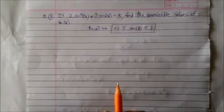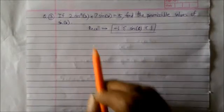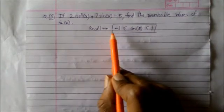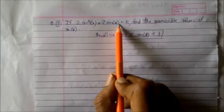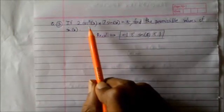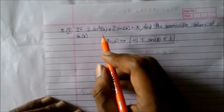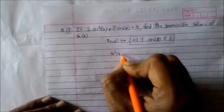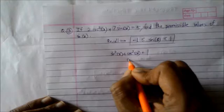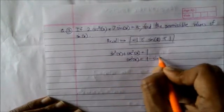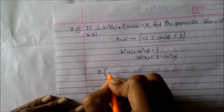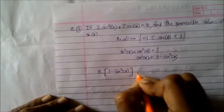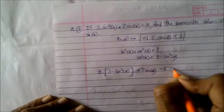Question number 3: If 2cos²x + 7 sin x = 5, find the permissible values of sin x. Recall that sin θ always lies between −1 and 1. We will find those values of sin x from this equation which lie in that range. Since sin²x + cos²x = 1, I can write cos²x as 1 − sin²x. Rewriting the given equation: 2(1 − sin²x) + 7 sin x − 5 = 0.